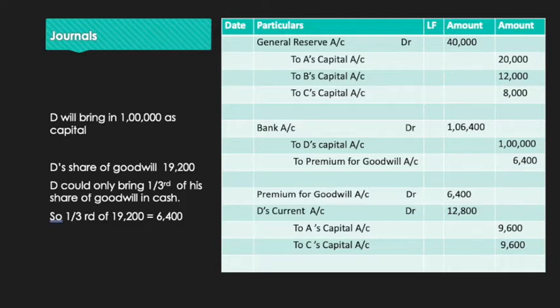Journal Entry 1: General Reserve Account Dr. 40,000 — To A's Capital 20,000, To B's Capital 12,000, To C's Capital 8,000. This is distributed in the old profit sharing ratio 5:3:2. Always remember, any accumulated profit or loss is distributed only among old partners in their old profit sharing ratio.